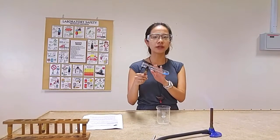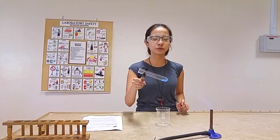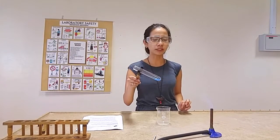So first, add in 2.5 to 2.7 grams of copper sulfate into the boiling tube.